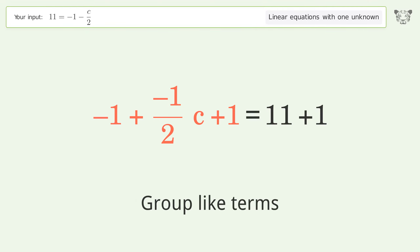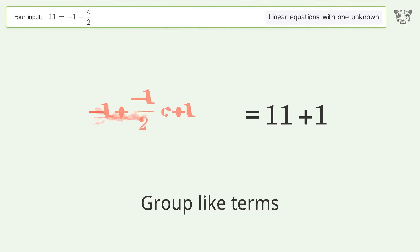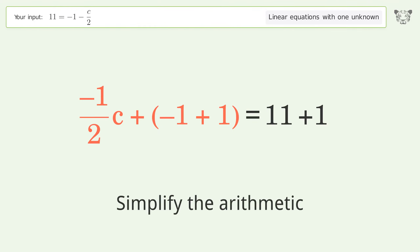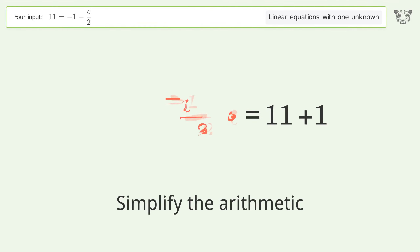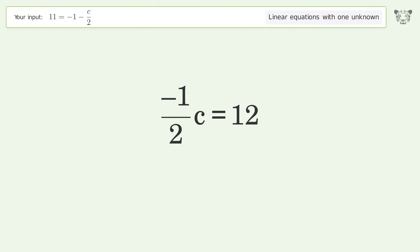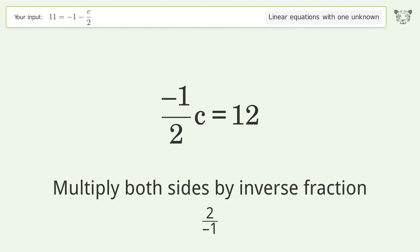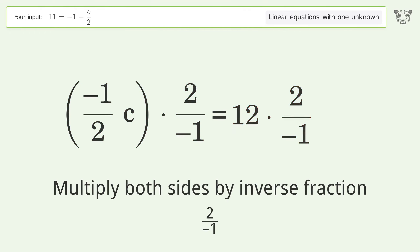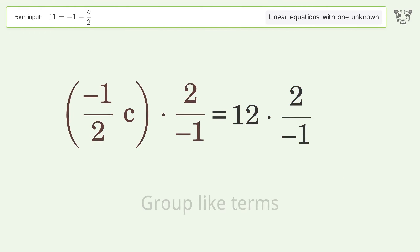Group like terms, then simplify the arithmetic. Isolate the c by multiplying both sides by the inverse fraction, two over negative one. Group like terms.